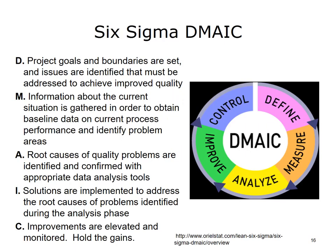Six Sigma was developed by Hewlett-Packard, Motorola, and GE, and comes directly from quality thinking in the 1930s. It combines established methods such as statistical process control, design of experiments, and failure mode and effects analysis (FMEA) in an overall framework with the primary aim of reducing variation in the process. Six Sigma aims to reduce variation through five clearly defined steps: Define, Measure, Analyze, Improve, and Control.